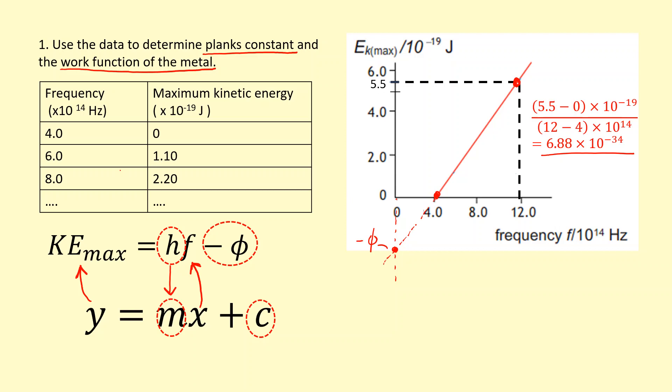And then to determine the work function, we can't use the y-intercept, we'll have to use the x-intercept here. So the x-intercept here is actually the threshold frequency, because at this frequency here, we can see the electrons are coming out with zero kinetic energy. So that must mean that corresponds to the threshold frequency.